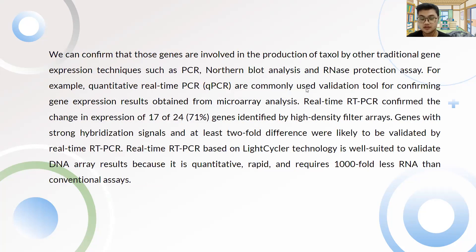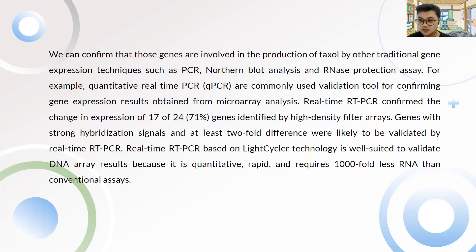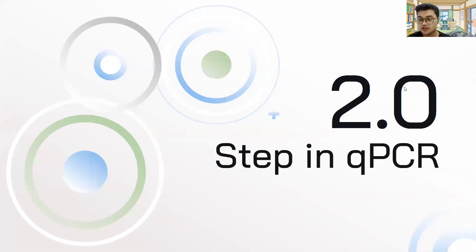We can confirm that those genes are involved in taxol production using traditional expression techniques such as PCR, Northern blot analysis, and RNA protection assays. For example, we can use qPCR as a validation tool to confirm the gene expression results obtained from the microarray analysis.